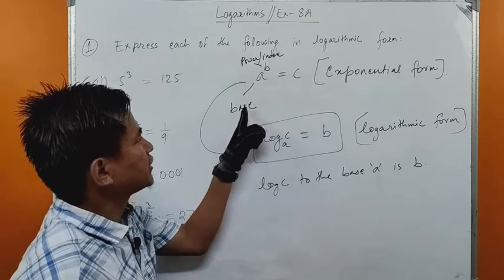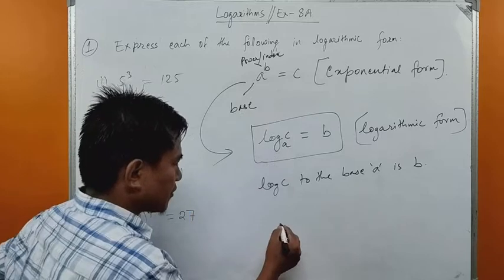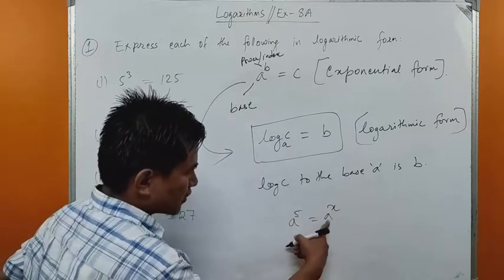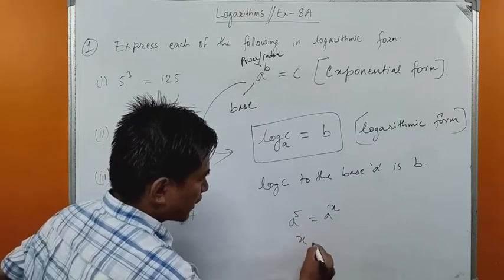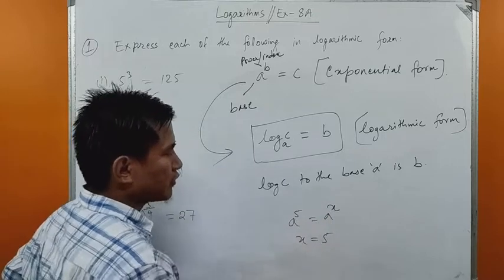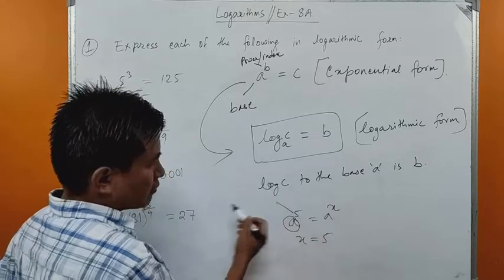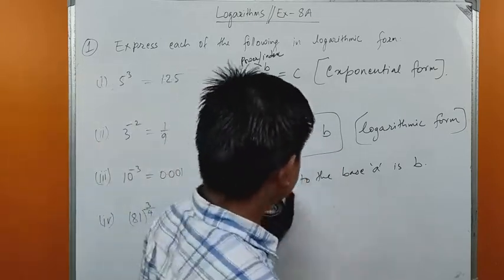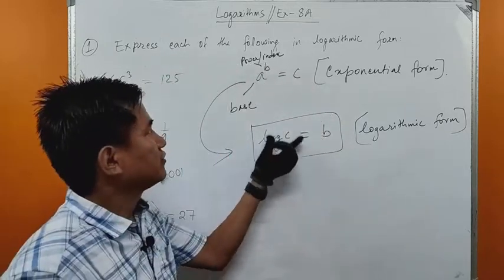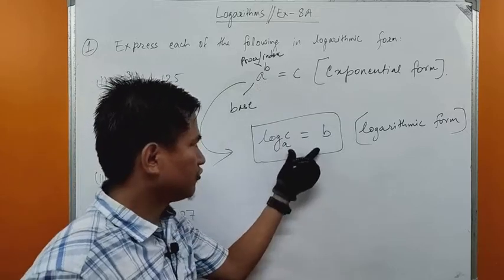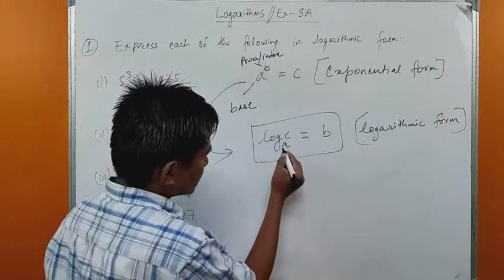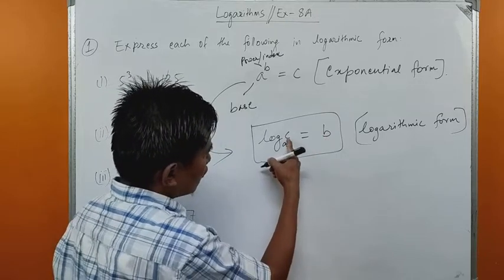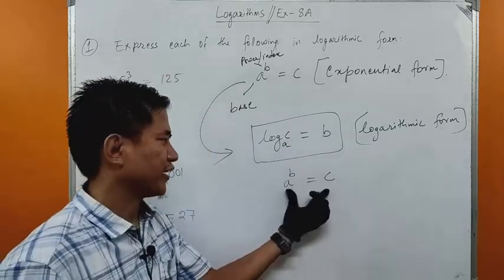Just as in Laws of Indices, if bases are equal then powers are equal. In the logarithmic form, the base remains in the base position, and the power goes to the right-hand side. We can also convert back from logarithmic form to exponential form: the base stays as base, the right-hand side value becomes the power, and c returns to the right-hand side.